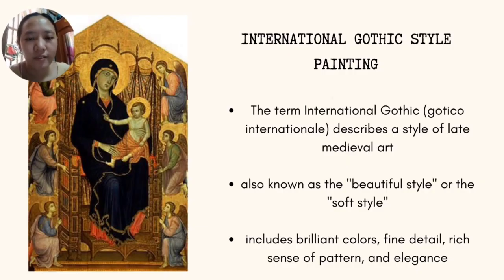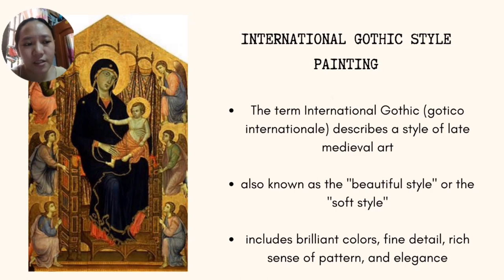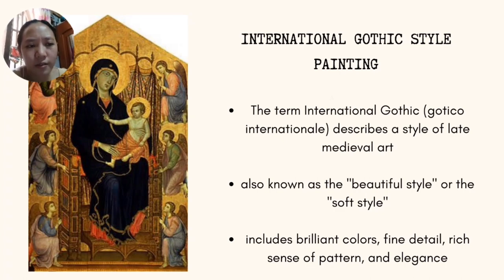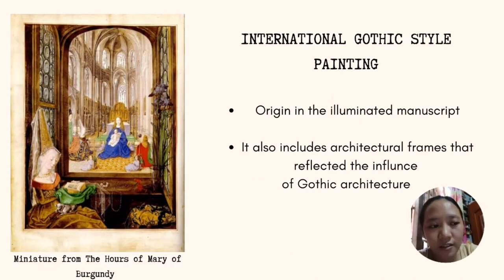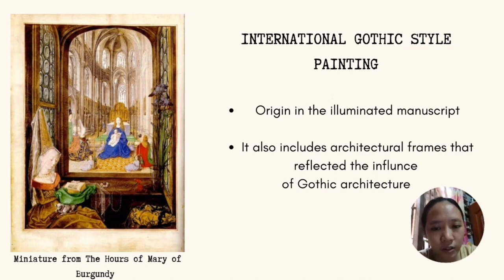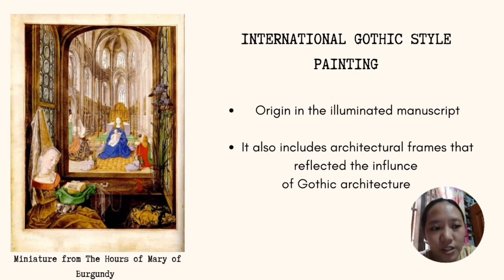International Gothic style painting: the term describes a style of medieval art. Gothic also refers to the style of European architecture, sculpture, and minor arts linked to medieval Romanesque art. Gothic style is also known as the beautiful style or the soft style — no matter how devotional or religious the subject, its elegance reflects the sophisticated cosmopolitan nature and pageantry of courtly life. Gothic style originated in the illuminated manuscript and included architectural frames reflecting the influence of Gothic architecture. An excellent example is the art of Mary of Burgundy, produced in Flanders, containing a miniature showing Mary of Burgundy in devotion with a wonderful depiction of a French Gothic cathedral behind her.